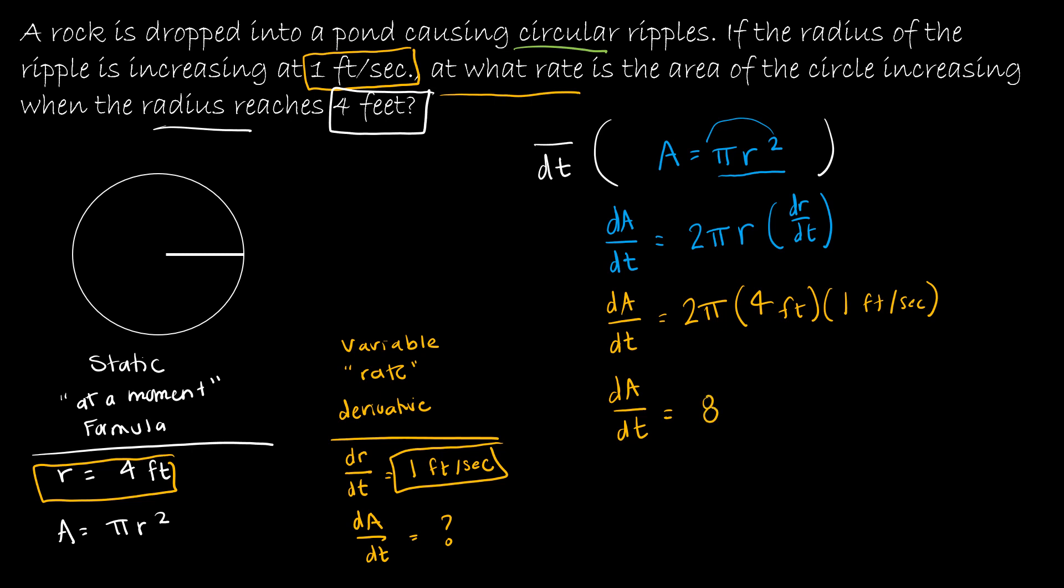And then if I'm unsure what the rate or what the units of measure would be, it's feet times feet divided by seconds. So this is square feet per second. So the change in area with respect to time is 8π square feet per second.